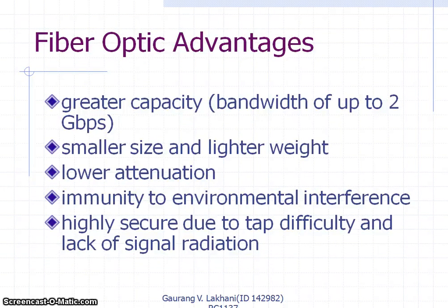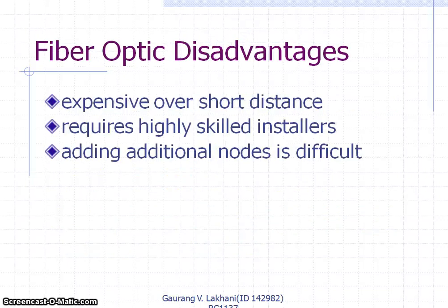Fiber optic advantages include greater bandwidth capacity compared to twisted pair and coaxial cable, supporting speeds up to 2 Gbps. The cables are smaller in size and lighter in weight, with lower attenuation. Most importantly, they provide immunity to environmental interference and are highly secure due to the difficulty of tapping and the lack of signal radiation. Disadvantages are that they are expensive for short distances, require highly skilled installers, and additional node installation is more difficult.